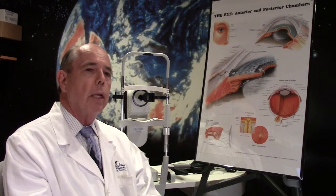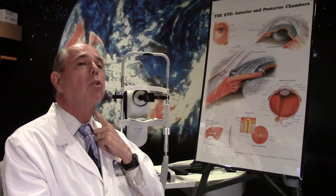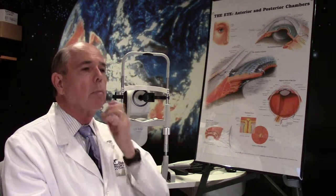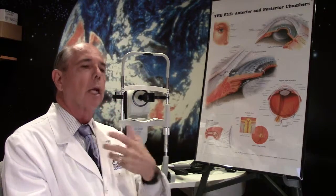People who get emboli or plaques, we need to find out where that plaque came from. Very commonly it comes from a plaque in the artery in your neck. As plaques develop in your arteries, just like they get plaques in your heart and you end up having a heart attack...